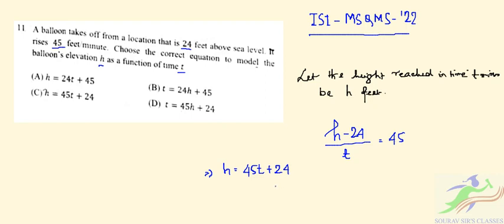From here, you can see the correct option will be C. The balloon elevation is h = 45t + 24.